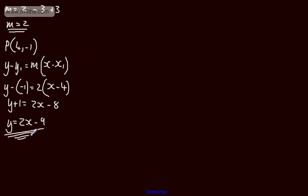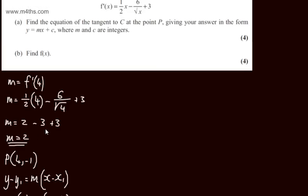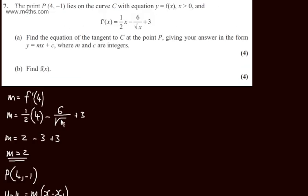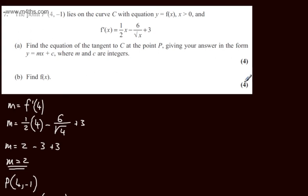So 4 marks for part A. We've simply gone ahead now, subbed in the value of 4 into the gradient function. Remember, the derivative is the gradient function. We've found the values, plugged them in, and simplified our answer. In part B, we need to find f of x. The question carries 4 marks.